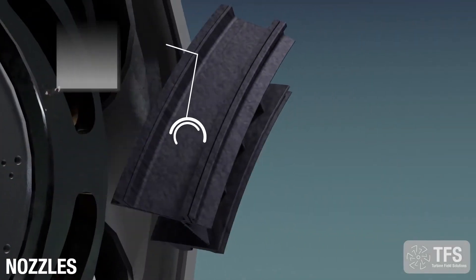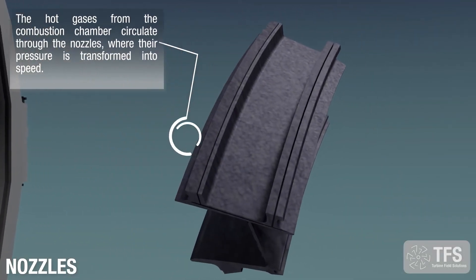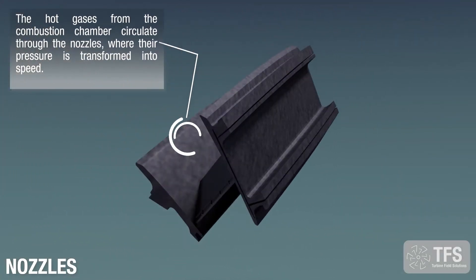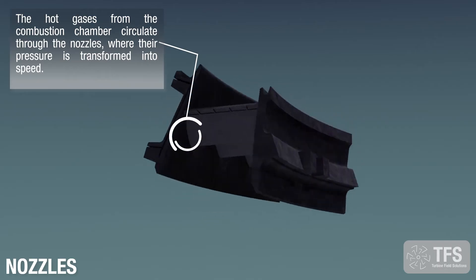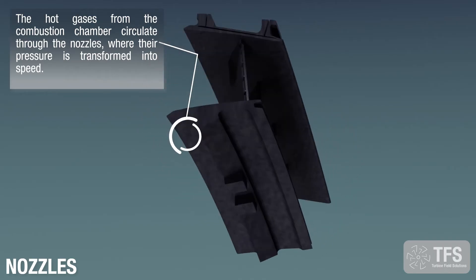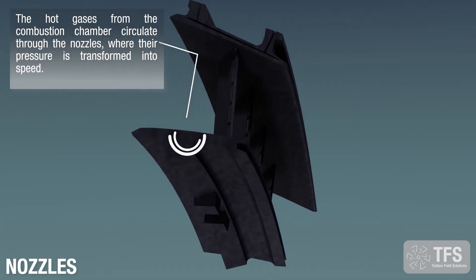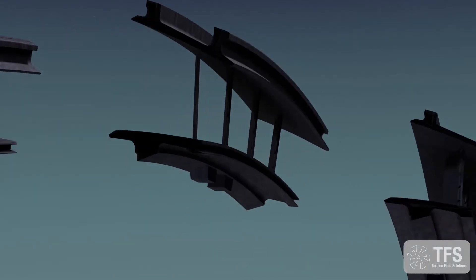Nozzles. The hot gases from the combustion chamber circulate through the nozzles, where their pressure is transformed into speed.